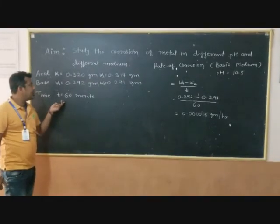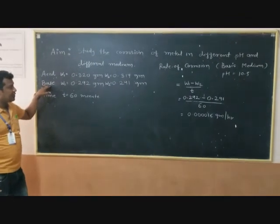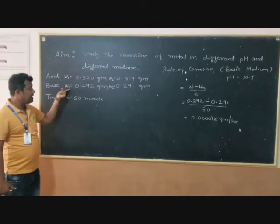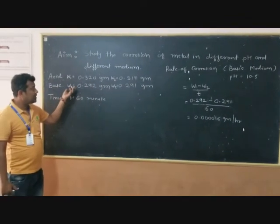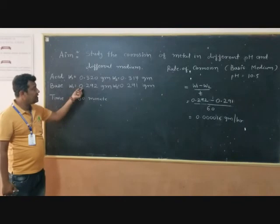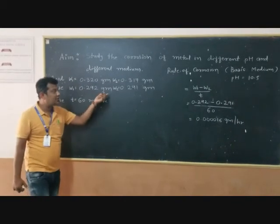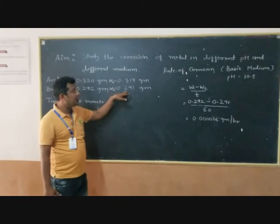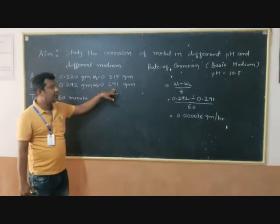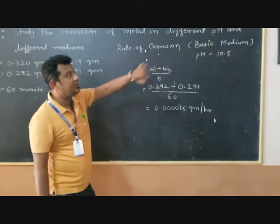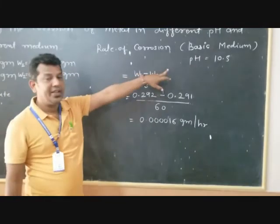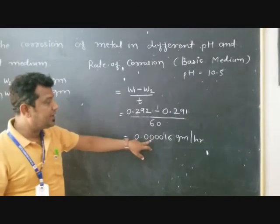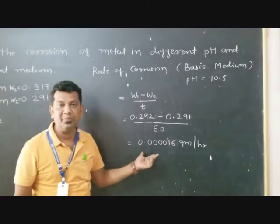We also calculate the rate of corrosion in the basic medium at pH 10.5. This is equal to 0.015 grams.